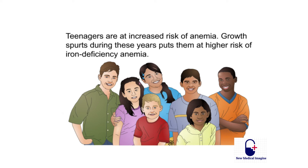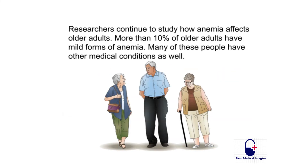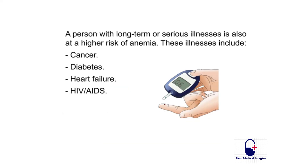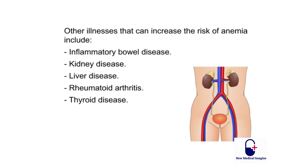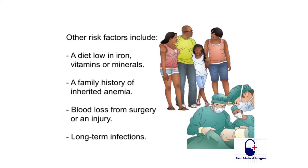Teenagers are at increased risk due to growth spurts putting them at higher risk of iron deficiency anemia. More than 10 percent of older adults have mild forms of anemia, many with other medical conditions as well. People with long-term or serious illnesses are at higher risk; these include cancer, diabetes, heart failure, HIV/AIDS, inflammatory bowel disease, kidney disease, liver disease, rheumatoid arthritis, and thyroid disease. Other risk factors include a diet low in iron, vitamins, or minerals, a family history of inherited anemia, blood loss from surgery or injury, and long-term infections.